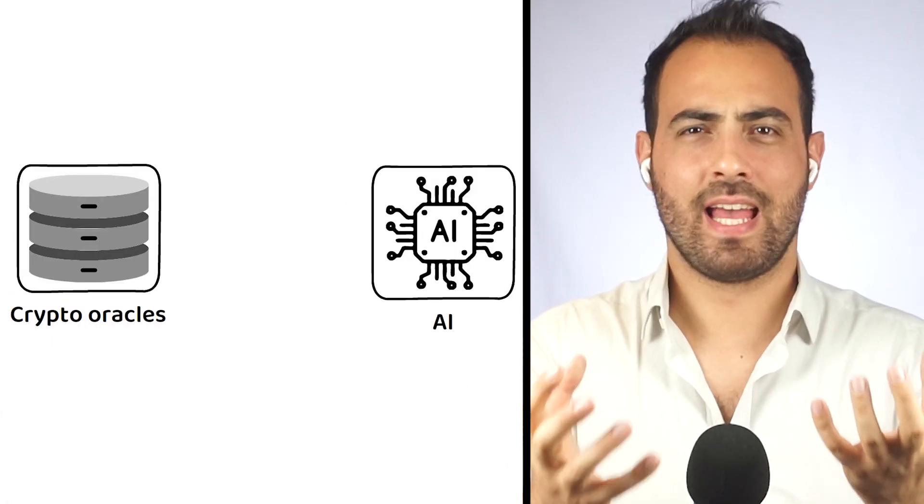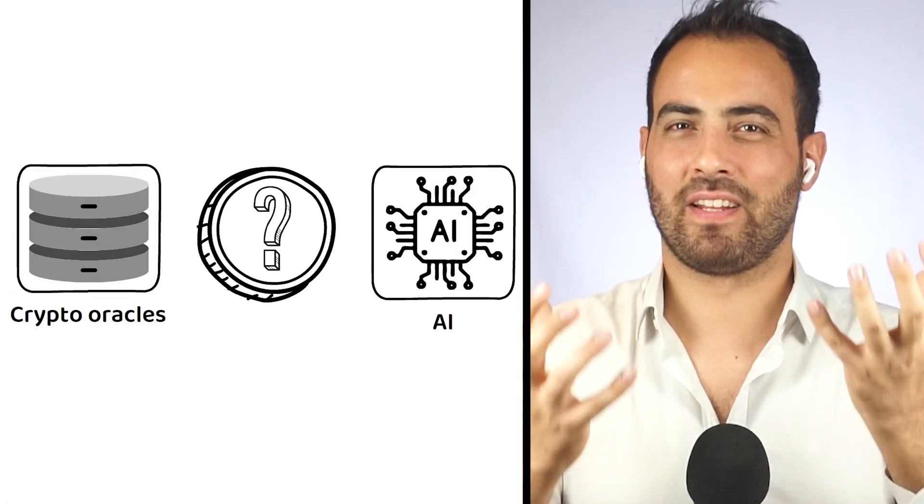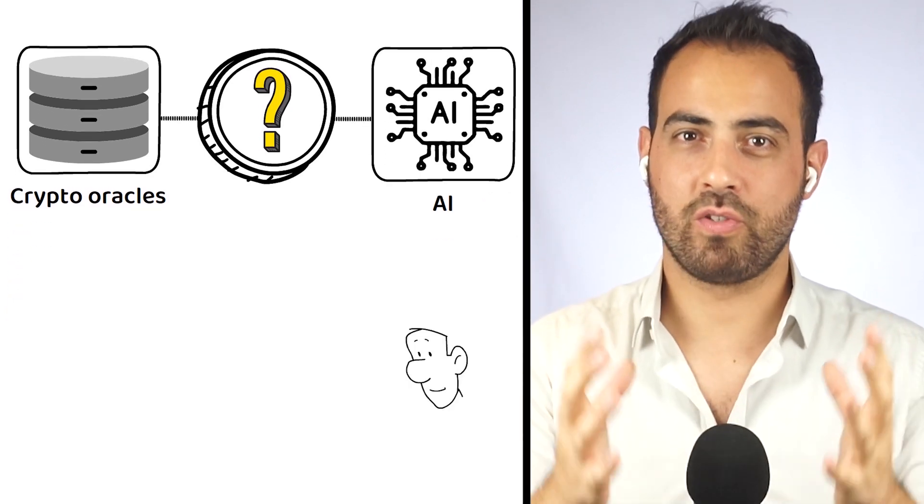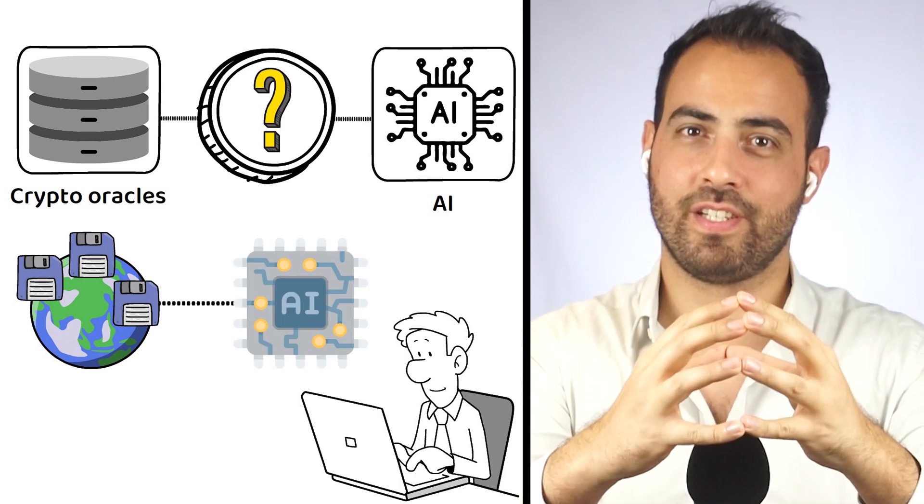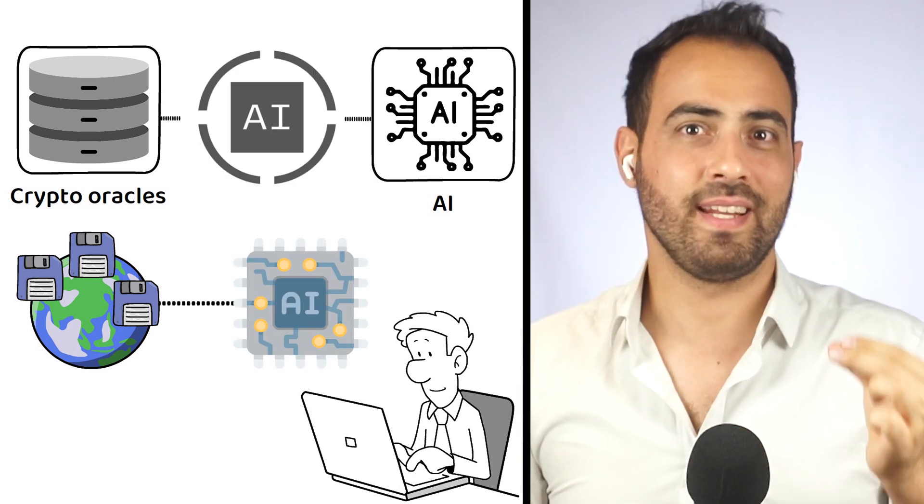Crypto Oracles and AI. Imagine a cryptocurrency that combines both, giving users the chance to integrate real-world data with advanced artificial intelligence. This is where Ori Chain comes in.